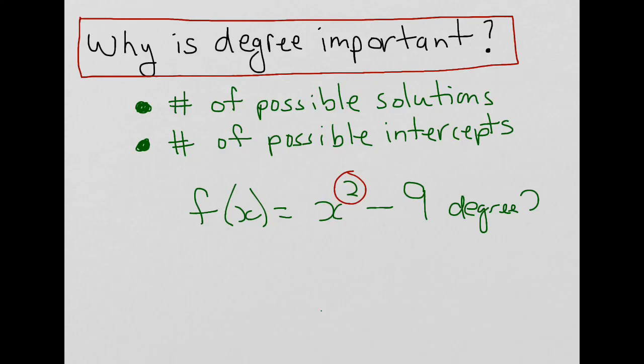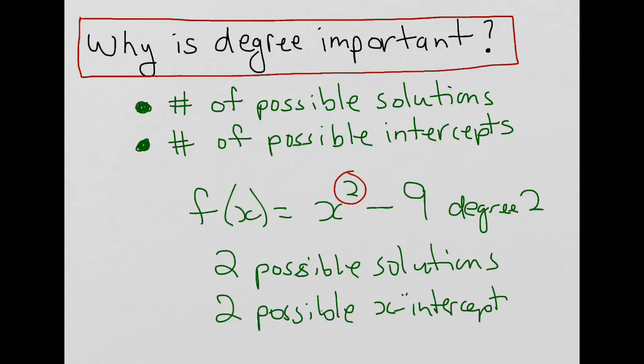That means there are two possible solutions to this—it could be less, but it can't be any more than 2. And there are two possible x-intercepts, because we're talking about a function dependent on x. It could be less, but there are two possible intercepts.